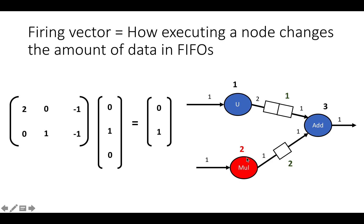For example, firing node 2, which is the second component of this vector, changes the buffer sizes by adding one piece of data to the buffer on arc 2 and changing the amount of data in arc 1 by 0, so adding nothing and removing nothing.